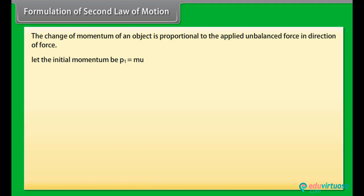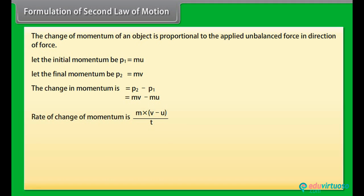Let the initial momentum be P1 = mu. Let the final momentum be P2 = mv. The change in momentum is P2 - P1, which equals mv - mu. Rate of change of momentum is m(v - u)/t. Force = KmA, where K is the proportionality constant.